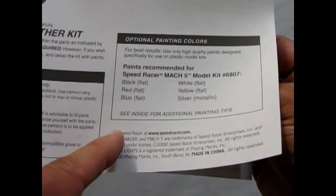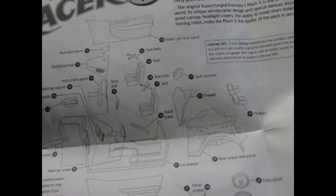They give you a paint code here for figuring out what colors to paint the car. Unfortunately it doesn't have an opening trunk for Spritle to hide in with Chim Chim the monkey. The entire instruction sheet here is done on one side. Here comes Speed Racer, he's a demon on wheels. He started off as a Japanese comic book character called Mach GoGoGo back in 1967.